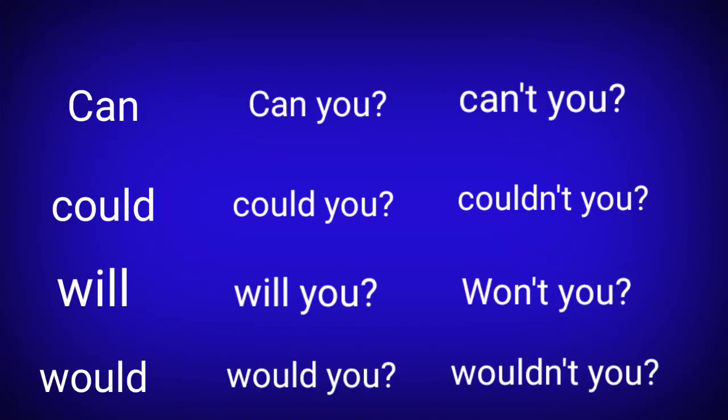Can: positive tag — can you; negative tag — can't you. Could: positive tag — could you; negative tag — couldn't you. Will: positive tag — will you; negative tag — won't you. Would: positive tag — would you; negative tag — wouldn't you.